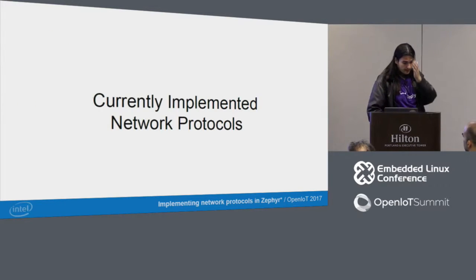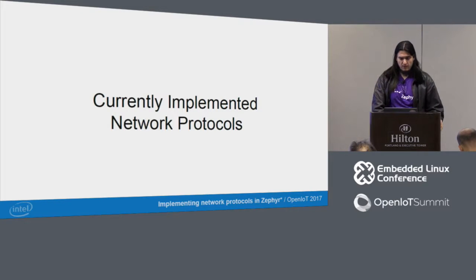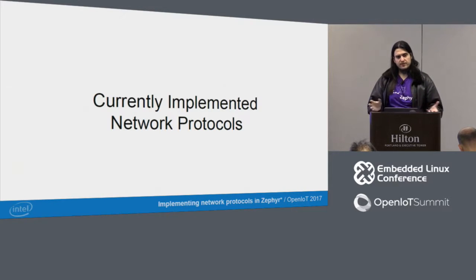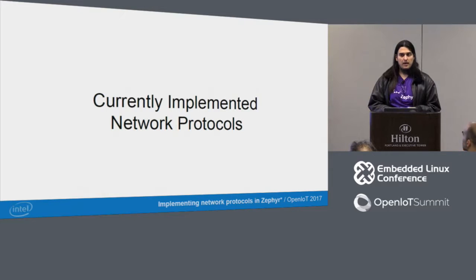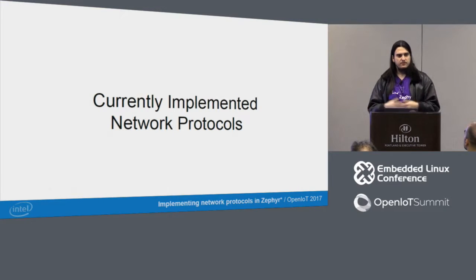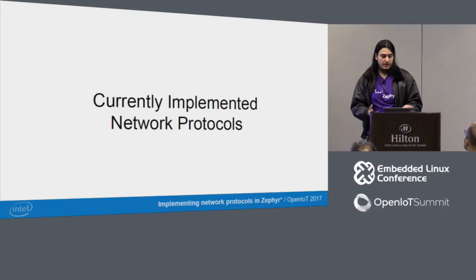The currently implemented network protocols: we implement a bunch of protocols. Some are related to IoT, which is the focus of Zephyr. Some are collateral and some are implemented mostly as proof of concept — because it's always a good thing when implementing a new API to also implement a proof of concept to verify you're doing the API right.